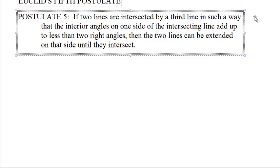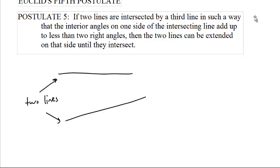Hold on. What do we got? We've got two lines and then we have an intersecting line. We're looking at the two angles, the interior angles, like in between the two lines, two interior angles on the same side of the intersecting line.